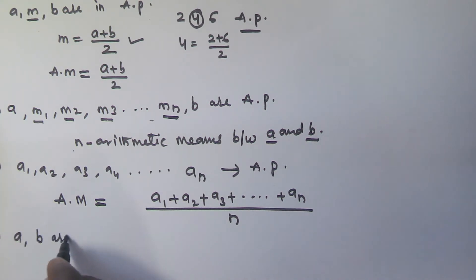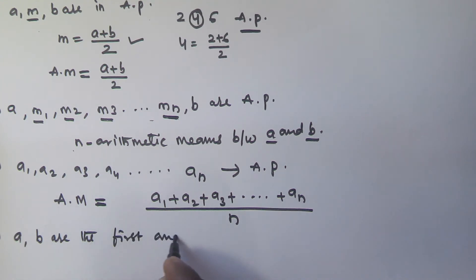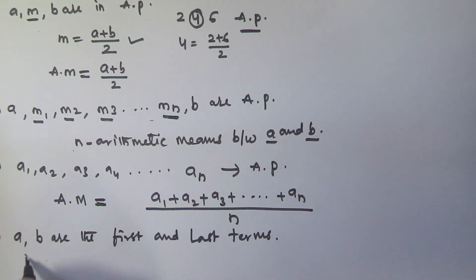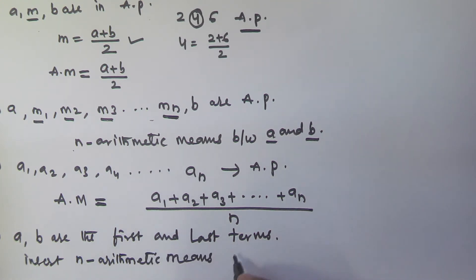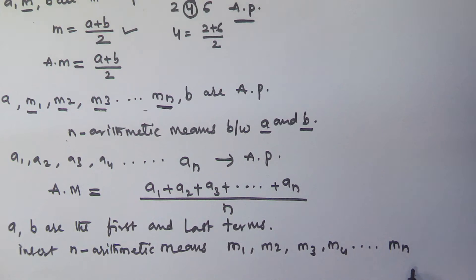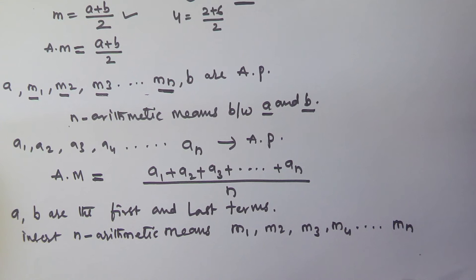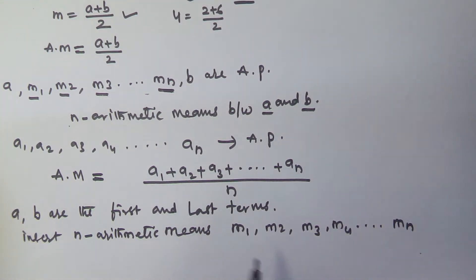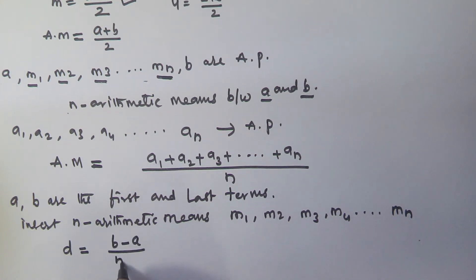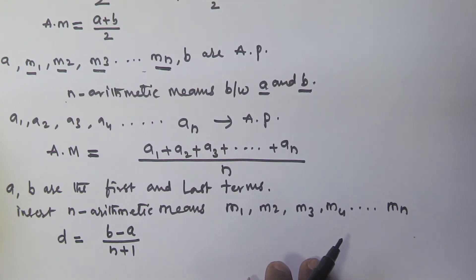So if a and b are the first and last terms, and between these two numbers we have to insert n arithmetic means — m1, m2, m3, and so on up to mn — then to insert those n arithmetic means we need to find the common difference d, which is given by d = (b - a) / (n + 1).